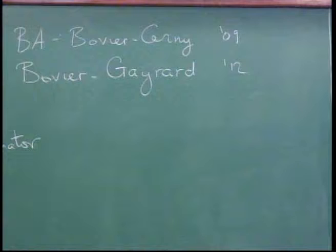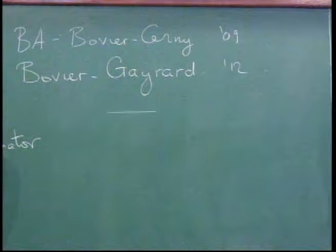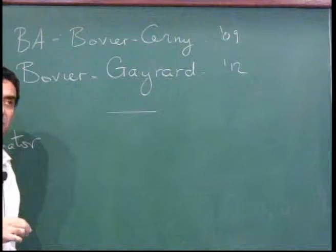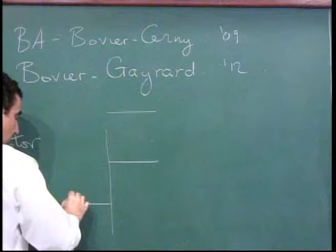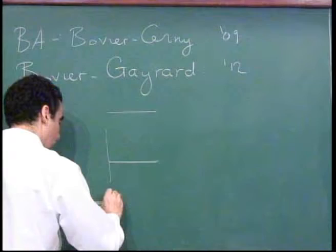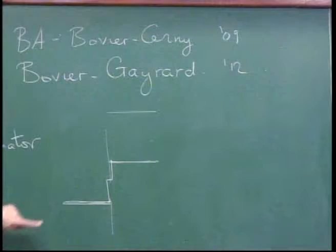That's what you need, because in this model you will have two very large and very close in time successive jumps for the clock process. What does that mean? You travel in the cube, you find a very deep place, your clock process jumps — the depth of the trap field is large. Then you move a little bit and you find another very deep trap nearby, because in a correlated place like the P-spin model, the neighbors of a very deep trap tend to be very deep too. So you'll have big successive jumps, but when you renormalize everything, you see just one big jump — all these are aggregated into one valley.